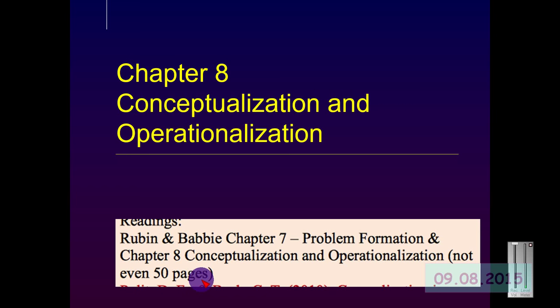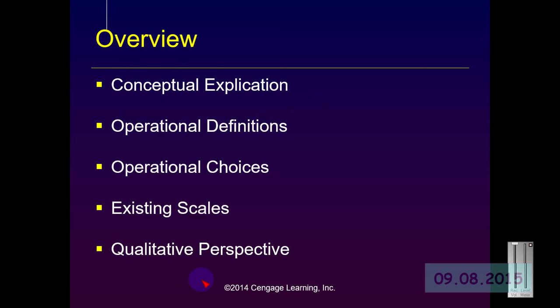This week is about conceptualization and operationalization when conducting a research project. In this chapter we will talk about the process of forming conceptualizations and operationalizing these conceptions for both quantitative and qualitative research processes. We'll discuss conceptual explication, operational definitions, operational choices, the use of existing scales, and finally the qualitative perspective to conceptualization and operationalization.